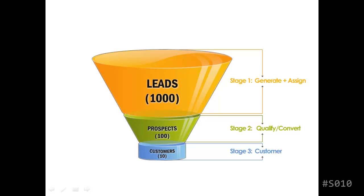Now with a prospect, your job will be to qualify that prospect. Do they have budget to work with you? Do they have a need that requires your service? So you qualify them inside the prospect slice of the funnel. Then your job will be to convert those qualified prospects into customers — you exchange money for your services.